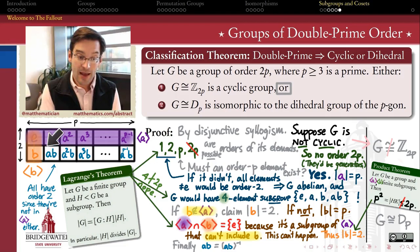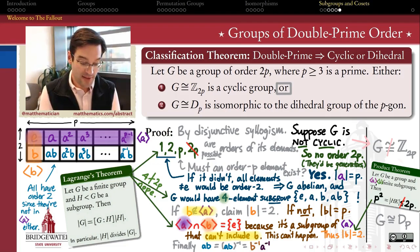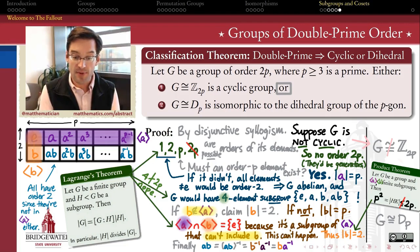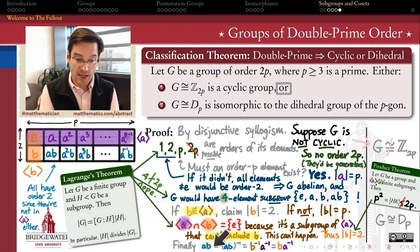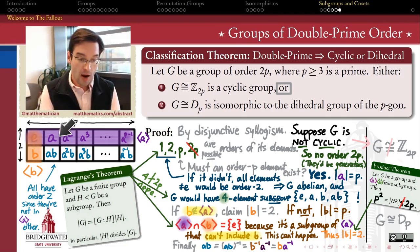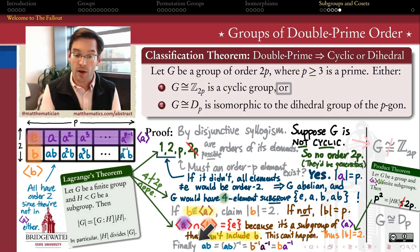For example, AB is one of those order-2 elements, so it equals its own inverse. By the shoes-and-socks formula, (AB)⁻¹ = B⁻¹A⁻¹. Since B has order 2, B⁻¹ = B. Reading from beginning to end: AB = B · A⁻¹. That is exactly the same relation that characterizes how T and R interact in the dihedral group: RT = T · R⁻¹. So everything we know about A and B is exactly the same as what we know about R and T in the dihedral group of the P-gon: B has order 2, A has order P, and AB = B · A⁻¹.